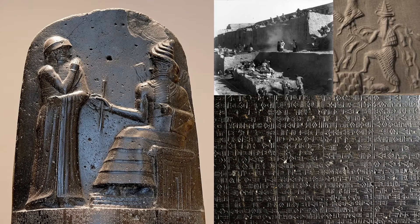Here are some close-ups of the stele that contains Hammurabi's code. Here we can see Hammurabi receiving the law code from Shamash, the Babylonian god of justice, who is also considered to be a god of the sun. Here is an image of the excavation of the stele before it was moved to the Louvre in Paris, and here is a close-up of the cuneiform writing system on which the code was recorded.